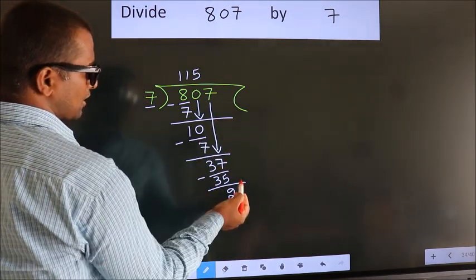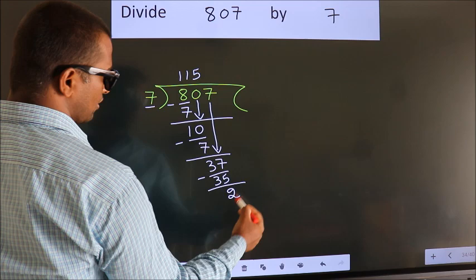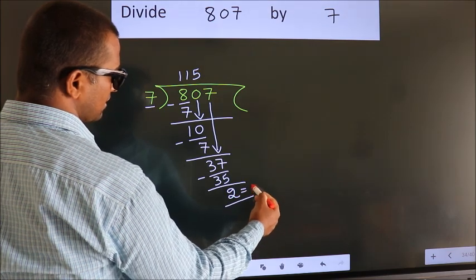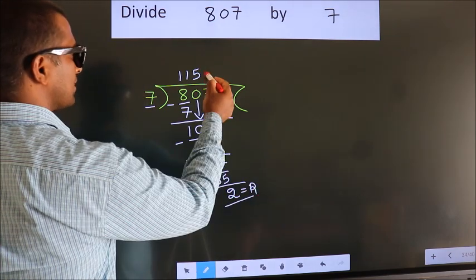No more numbers to bring it down. So we stop here. This is our remainder. This is our quotient.